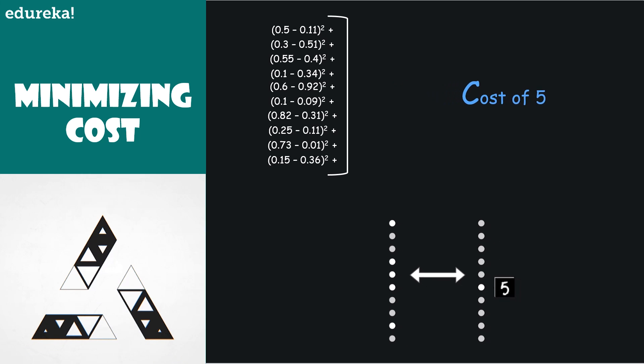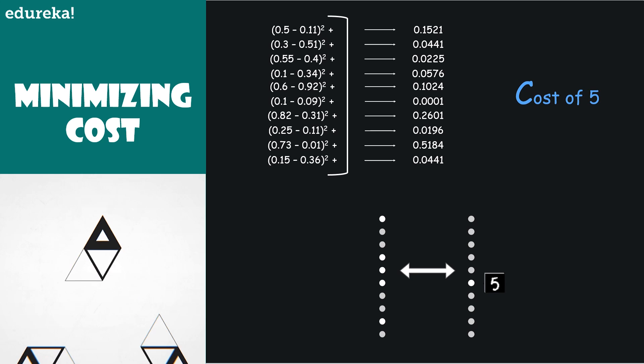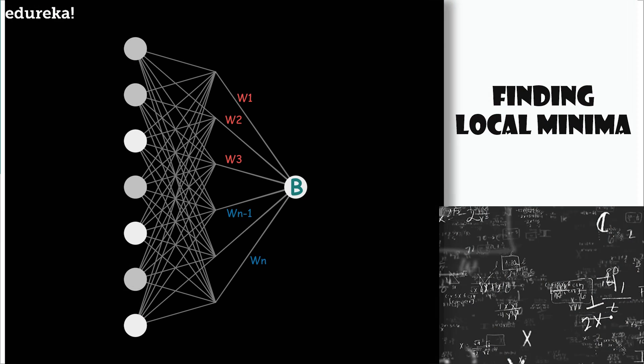This sum is small when the network confidently classifies the image correctly. The aim of our training algorithm will be to minimize the cost as a function of weights and biases. So then what we do is consider the average cost of all these tens of thousands of training examples. The way it's defined depends upon the network's behavior over all the tens of thousands of pieces of training data. That's a lot to think about. How do you find an input that minimizes the value of this function?